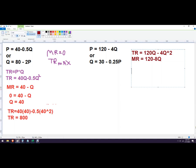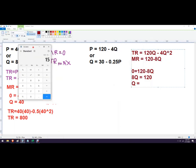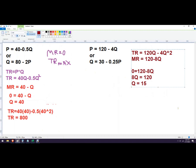So if we do MR is 0, just plug in a 0 there. We'll get 120 minus 8Q. And then 8Q equals 120. Q equals 120 divided by 8, which is 15. So revenue maximizing quantity is 15.